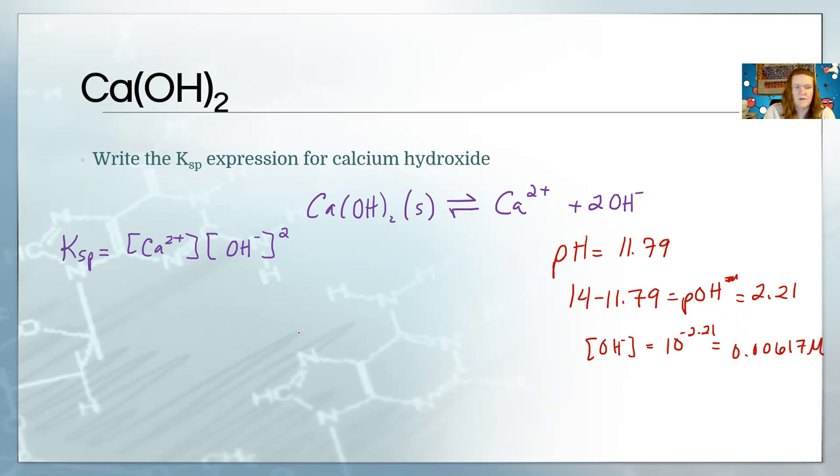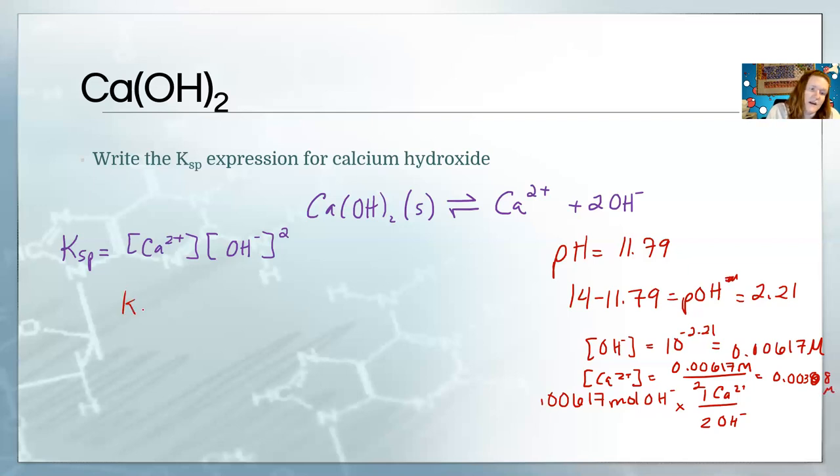All right, and so that's how much hydroxide we have present. The calcium is going to be half of that, right? So if you just think about it as moles for a second: there you have to cancel OH⁻ to get it into calcium, and so that's going to be half as much as you have for the hydroxide. And so you can figure out that the calcium ion is going to be 0.00308. That's the molarity of the calcium.